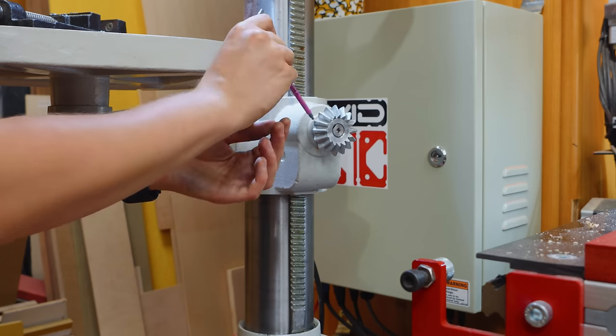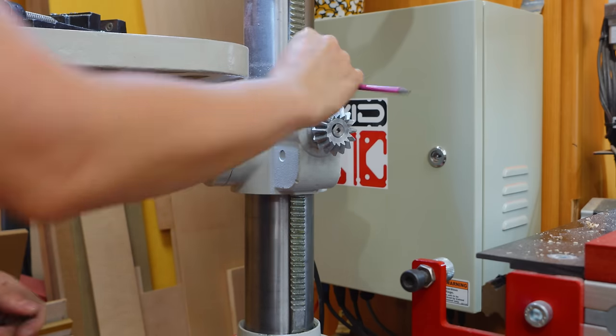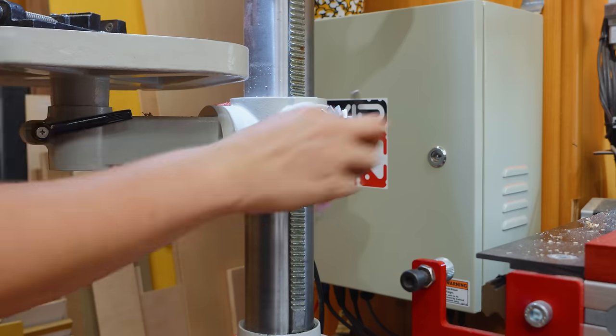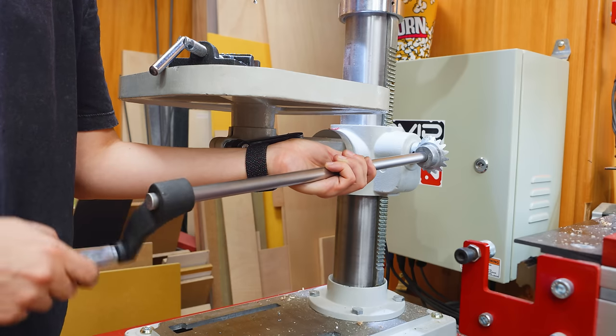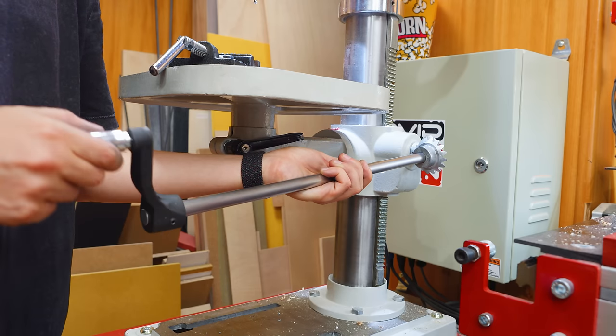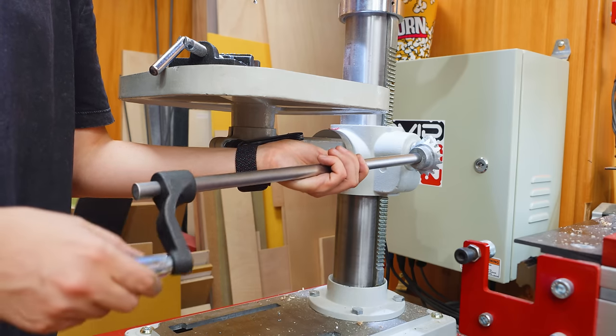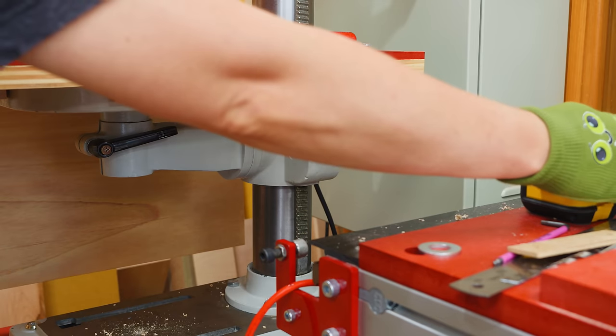An interesting idea is to transpose the elevation crank to the front of the table. To do that, I use miter gears to create a 90 degree angle and an extension rod to where the crank will be attached. This makes raising and lowering the table much more convenient and you don't have to awkwardly reach your arm across the right side of the table.